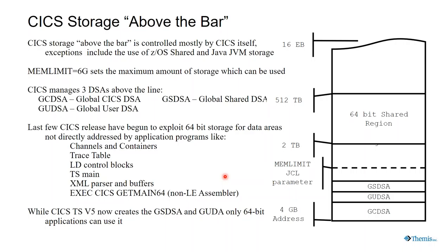Java's kind of out — it runs in its own little protected JVM. So now we're down to C or assembler code that you might write running 64-bit, and I have not seen many of those in my travels. The UDSAs, the user DSAs, and the CICS DSAs are where storage violations can get detected. Any place else within CICS, if you clobber some of the other data areas, they're not detectable.